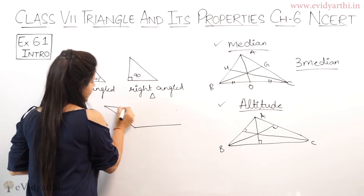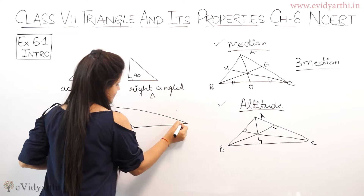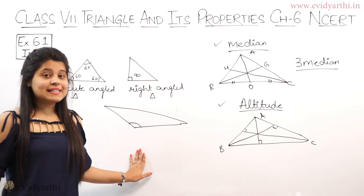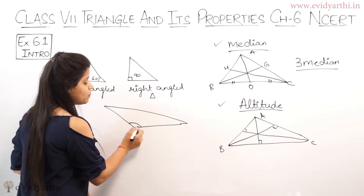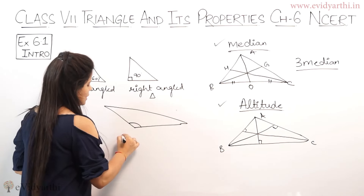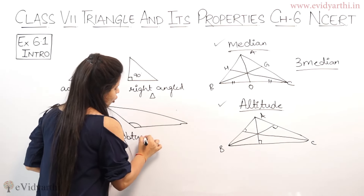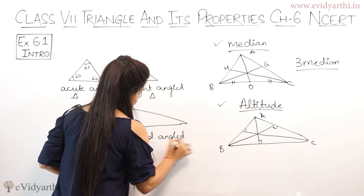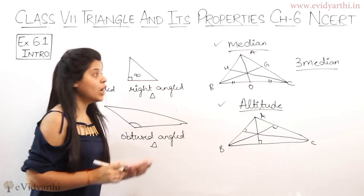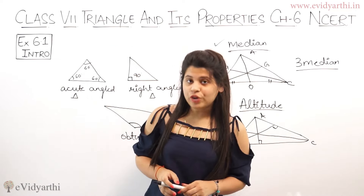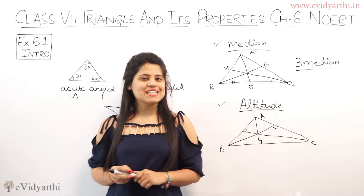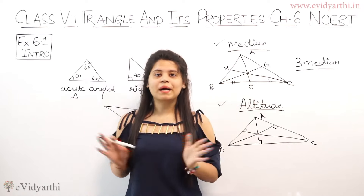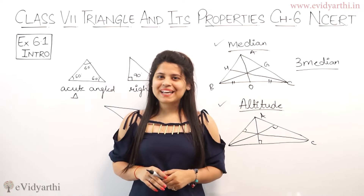One type is still left — that is obtuse. An obtuse angled triangle looks something like this. Its one angle is greater than 90 degrees, meaning it is an obtuse angle. So this will be an obtuse angled triangle. This was an introduction to triangles; now we'll start exercise 6.1 using these topics we have discussed.